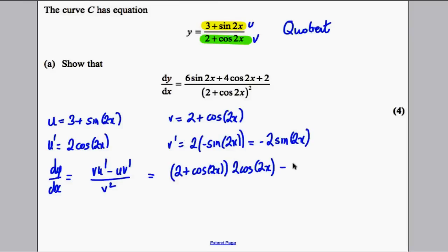So it would be this times this, but I'm going to write this first here. Negative 2 sine 2x multiplied by this here would be plus 2 sine of 2x. And we're going to multiply all of that by 3 plus sine of 2x.